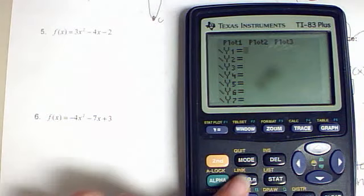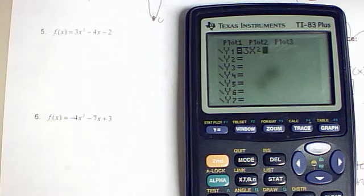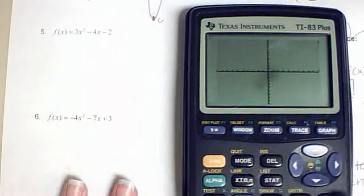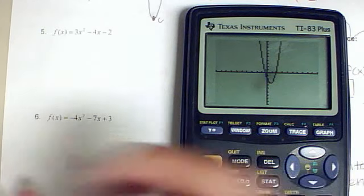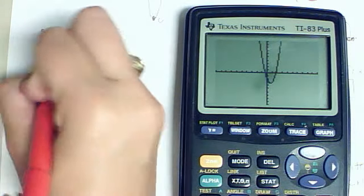We're going to go to Y equals and type in what we have. Graph 3x squared minus 4x minus 2 and graph. And as you can see, this one is going down. It has a minimum.